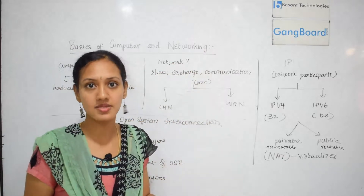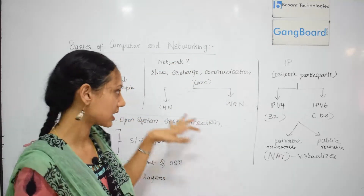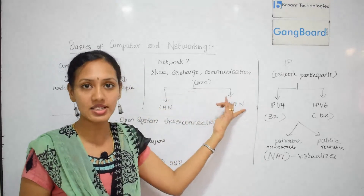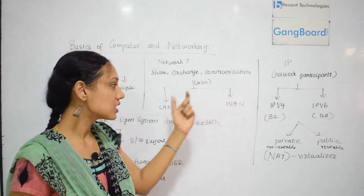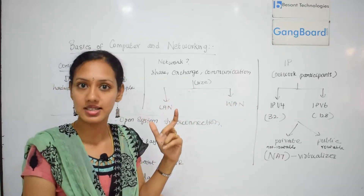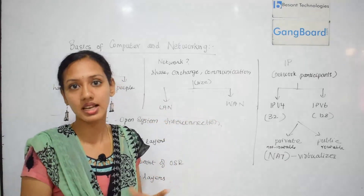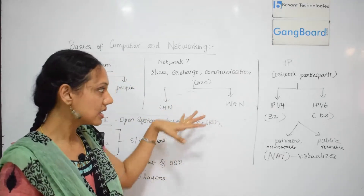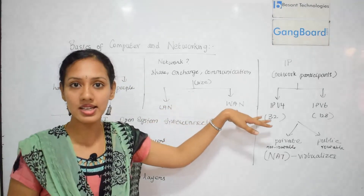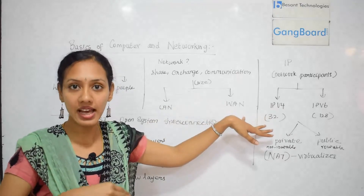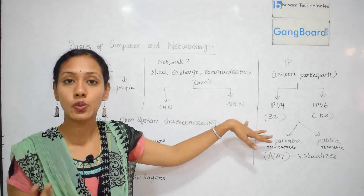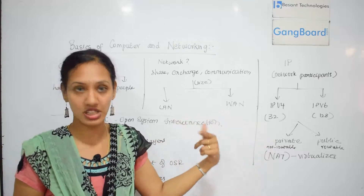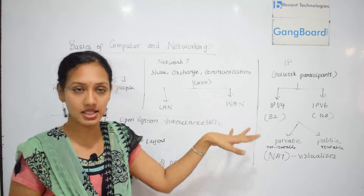Based on the network size, we can divide networks into two main categories: LAN and WAN. LAN is Local Area Network and WAN is Wide Area Network. In a LAN, many computers are linked together within an office or a school. WAN is Wide Area Network — when computers are connected within a wide area, such as between cities, states, or even countries, that comes under the WAN category.